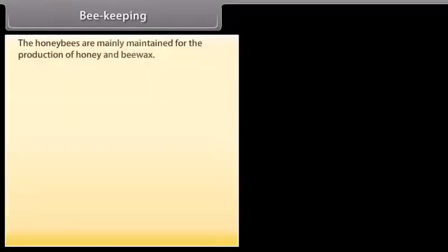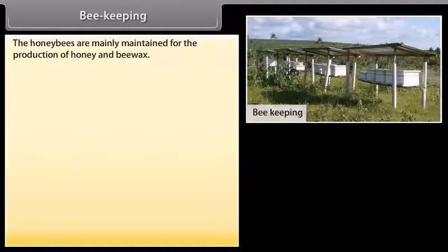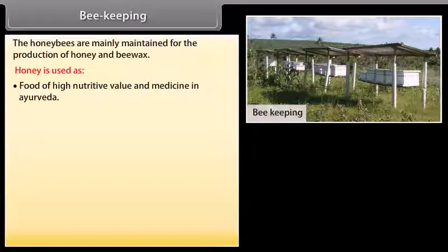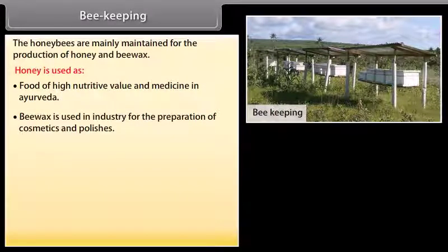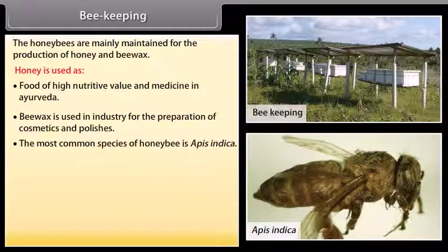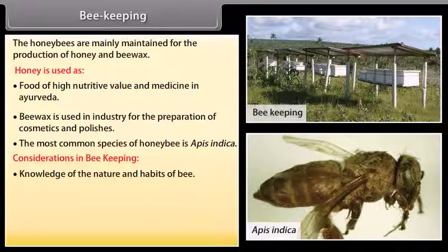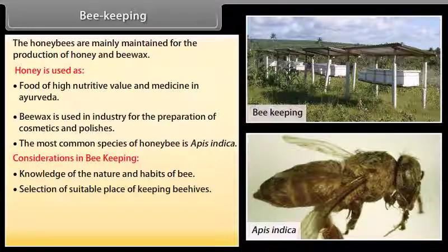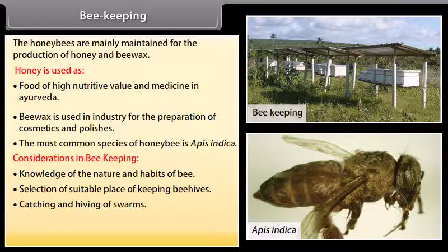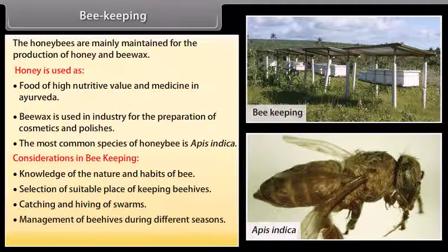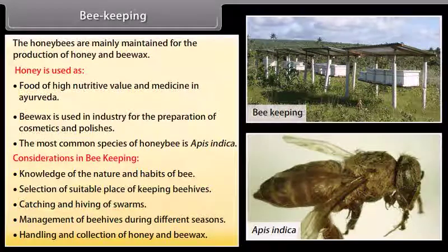Beekeeping: Honeybees are mainly maintained for the production of honey and beeswax. Honey is used as a food of high nutritive value and as medicine in Ayurveda. Beeswax is used in industry for the preparation of cosmetics and polishes. The most common species of honey bee is Apis indica. Considerations in beekeeping include: knowledge of the nature and habits of bees, selection of a suitable place for keeping beehives, catching and hiving of swarms, management of beehives during different seasons, and handling and collection of honey and beeswax.